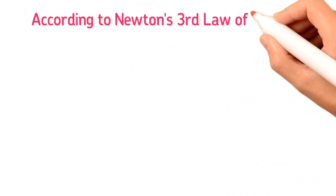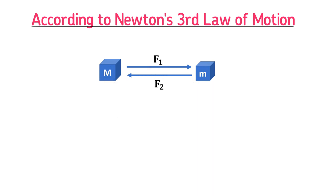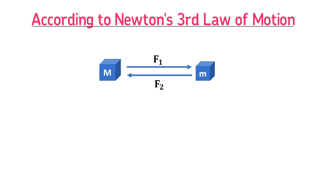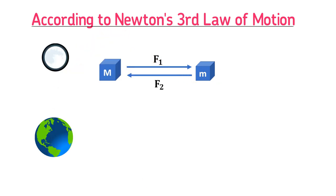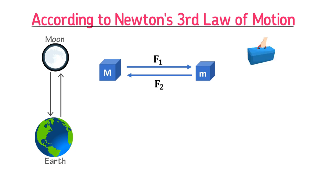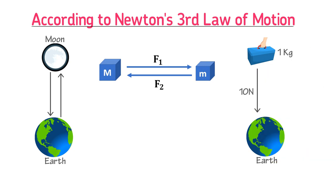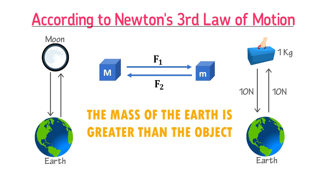According to Newton's third law of motion, if mass M exerts force F1 on mass m, then mass m also exerts force F2 on mass M. For example, if the earth pulls on the moon, the moon also pulls on the earth with a force of equal magnitude. Consider a 1 kg body above the earth's surface: the earth exerts about 10 newtons on it, and simultaneously, the 1 kg object exerts 10 newtons on the earth. Because the earth's mass is much larger, the earth doesn't accelerate toward the object, but the object accelerates toward the earth.